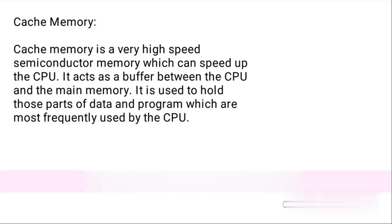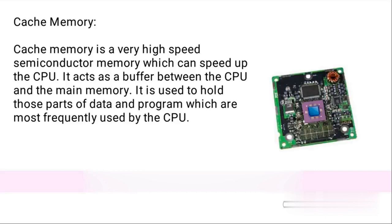Cache memory. Cache memory is a very high-speed semiconductor memory which can speed up the CPU. It acts as a buffer between the CPU and the main memory. It is used to hold those parts of the data and program which are most frequently used by the CPU.